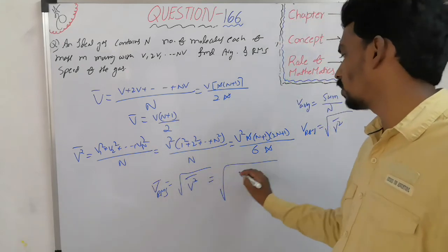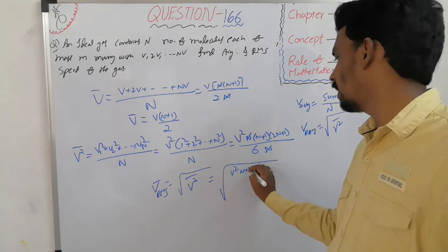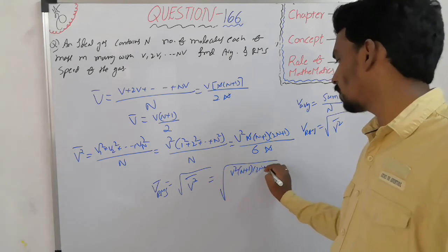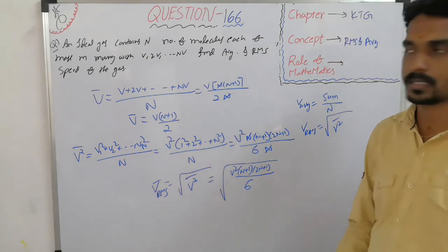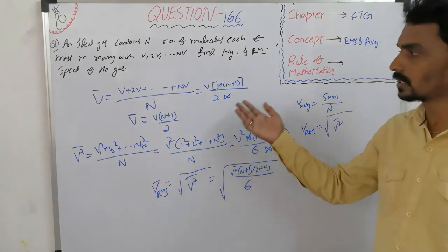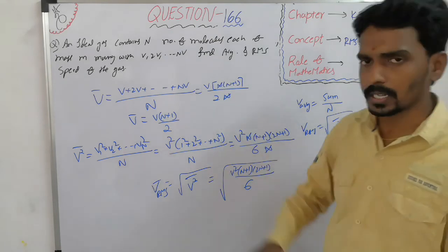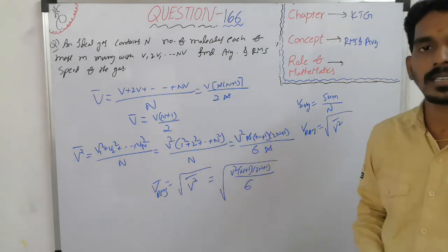That is, under root, what is it? V square, n plus 1, 2n plus 1, whole divided by 6. If they give 10 particles, then substitute n equals 10. If they give 100 particles, then substitute n as 100.